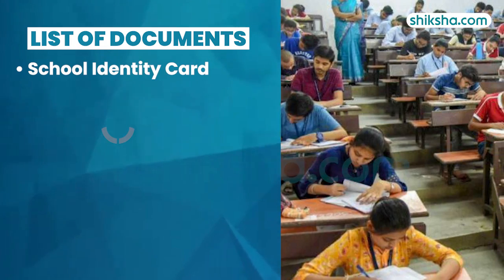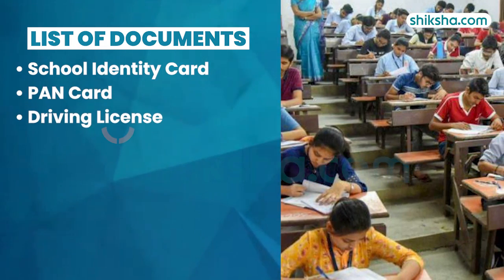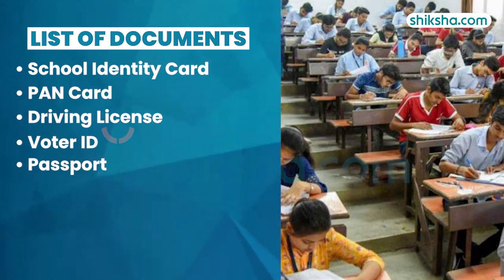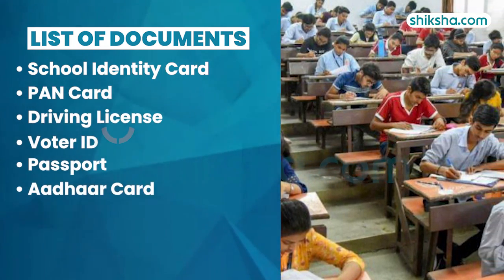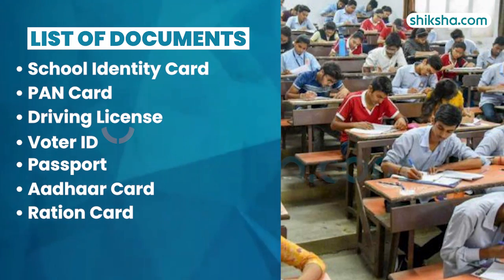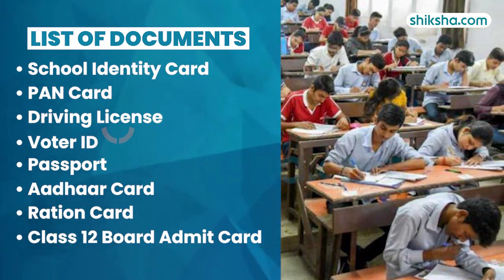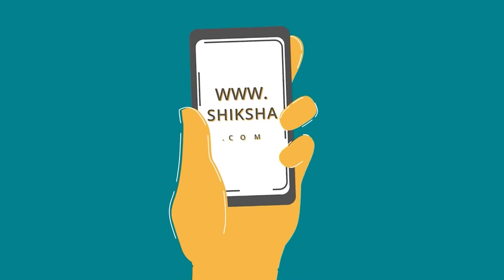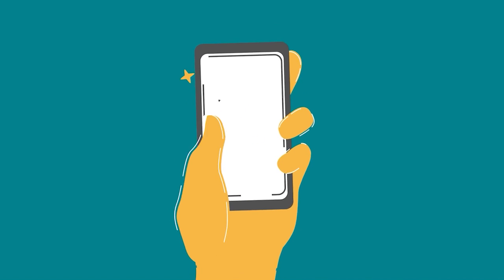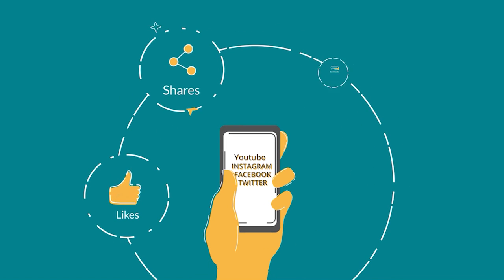School Identity Card, PAN Card, Driving License, Voter ID, Passport, Aadhaar Card with Photograph, Ration Card with Photograph, Class 12th Board Admit Card with Photograph. For more information, candidates can check important steps from the description box below.